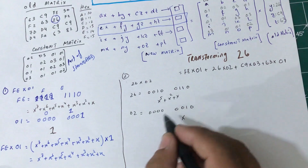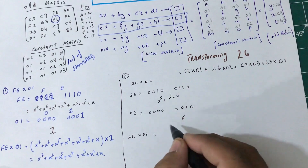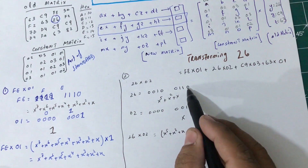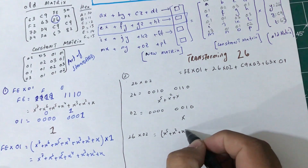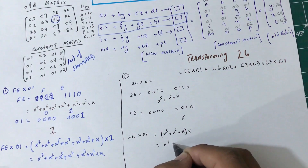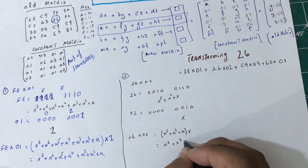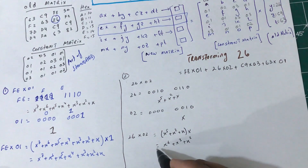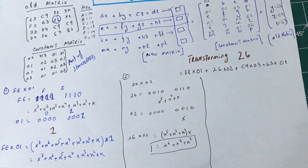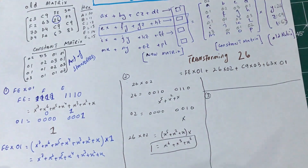So let's multiply 26 × 02: (x⁵ + x² + x) multiplied by x. When the bases are the same we add powers: x⁶ + x³ + x². I'll leave this result as is for now. Let's move on to number 3.